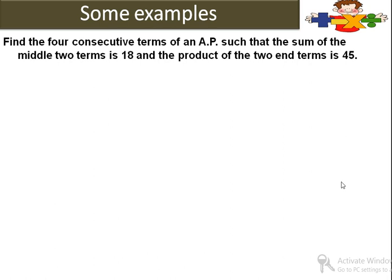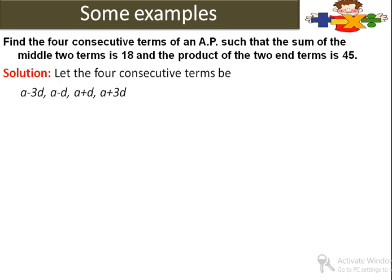Let us solve some examples. Find the four consecutive terms of an AP such that the sum of the middle two terms is 18, and the product of the two end terms is 45. सबसे पहले हमें four consecutive terms suppose करनी हैं. Let the four consecutive terms be a minus 3d, a minus d, a plus d, a plus 3d.